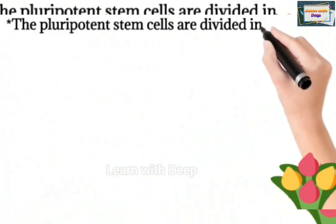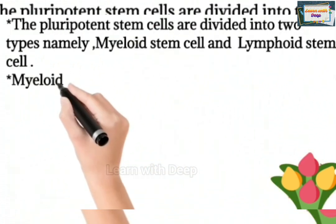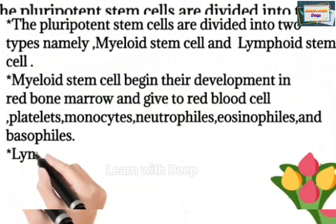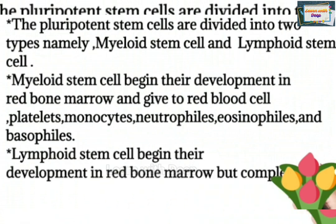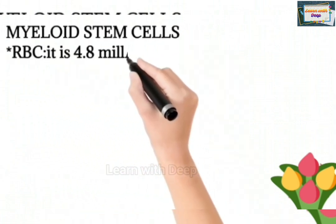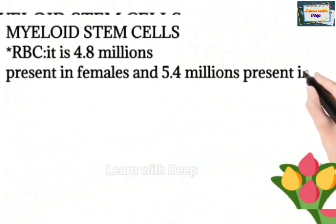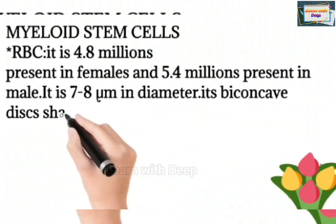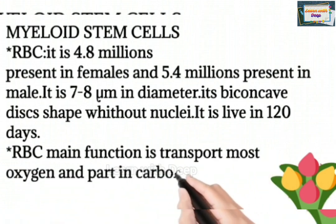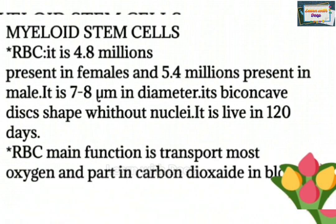Pluripotent stem cells divide into two types: myeloid stem cells and lymphoid stem cells. Myeloid stem cells begin development in red bone marrow and give rise to red blood cells, platelets, monocytes, neutrophils, eosinophils, and basophils. RBCs measure 4.8 million per microliter in females and 5.4 million in males. They are 7 to 8 micrometers in diameter, biconcave disc-shaped without a nucleus, and live for 120 days. Their main function is to transport oxygen and carbon dioxide in the blood.